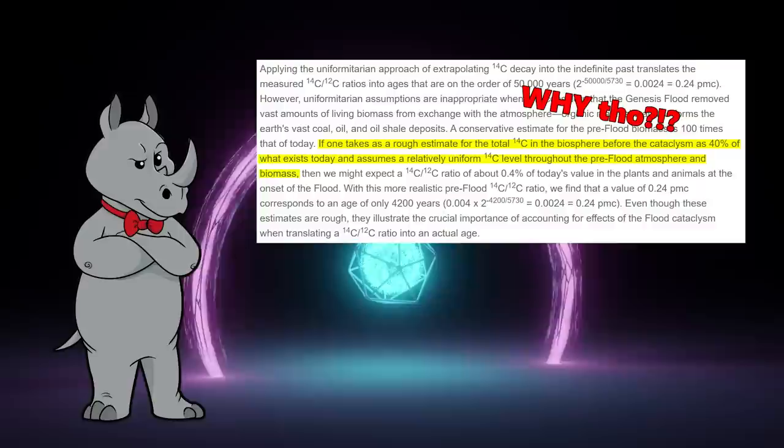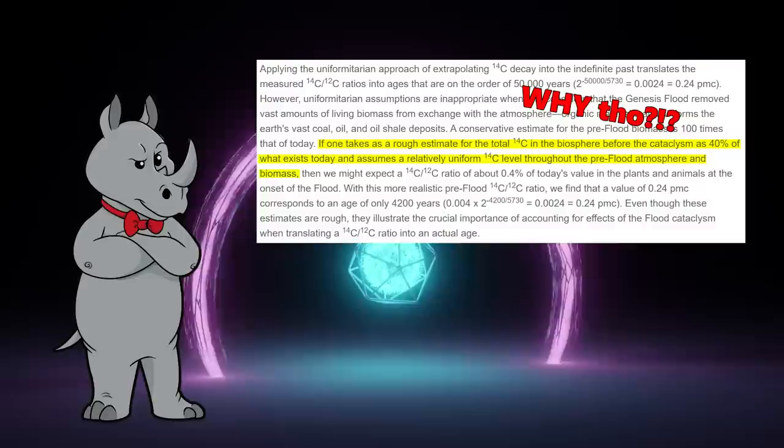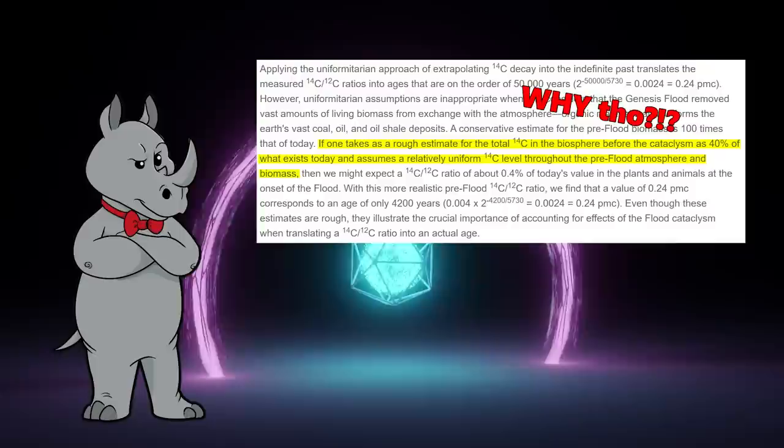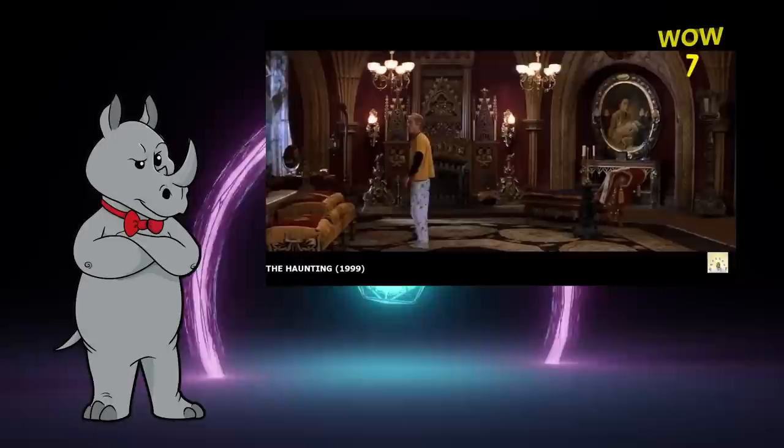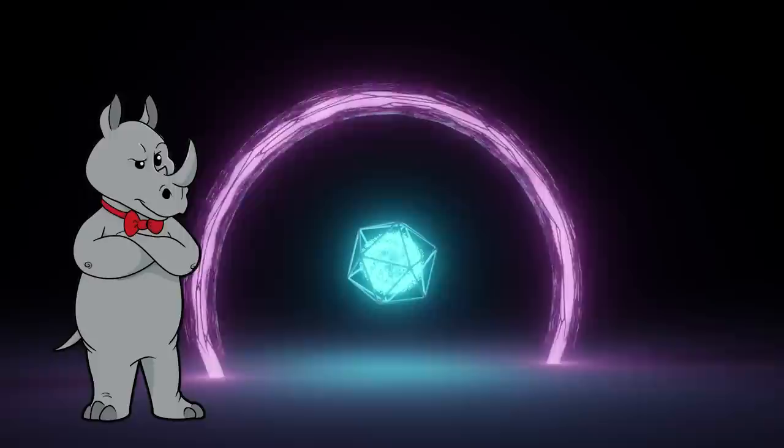It basically just automatically spits out a result of 50,000 years because there isn't enough C 14 for it to be younger than that. In other words, the carbon dating did not show a young earth, nor did this exercise show carbon dating to be unreliable. The carbon dating worked exactly as it was supposed to. And the guy doing the calculation treated modern carbon as though it were original to the sample. He then started with wanting to get an age of 4200 years for these samples as his conclusion. And so he made some assumptions about pre-flood conditions that would allow him to get there with that calculation. And no, he did not justify these assumptions.